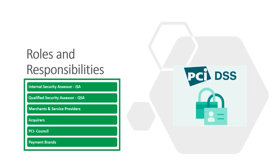The roles and responsibilities we are going to review in this lesson are: the Internal Security Assessor or ISA, the Qualified Security Assessor or QSA, merchants and service providers, acquirers, the PCI Security Standards Council, and the Payment Brands — including their responsibilities in the event of a data breach involving cardholder data.